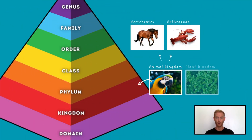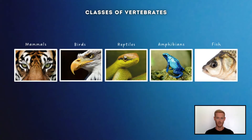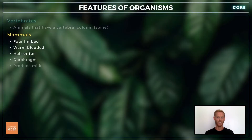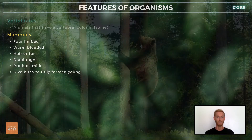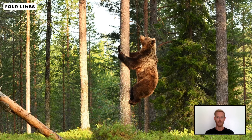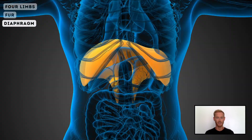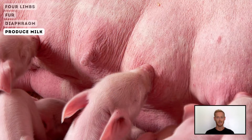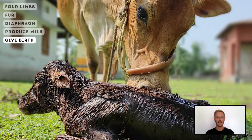Next you need to know about the different groups or classes within the animal kingdom. We'll begin with the classes of vertebrates, which are animals that possess a vertebral column or spine. They are mammals, birds, reptiles, amphibians and fish. Mammals are a diverse group of warm-blooded vertebrates characterized by four limbs adapted for a wide range of movements, hair or fur that helps to insulate the body, a diaphragm which plays a key role in pulmonary ventilation or breathing, and mammary glands that produce milk to nourish their young, with the ability to give birth to fully formed young instead of laying eggs.